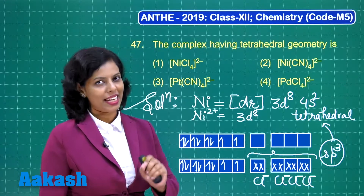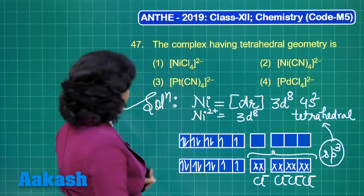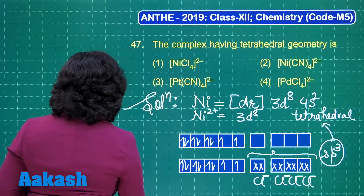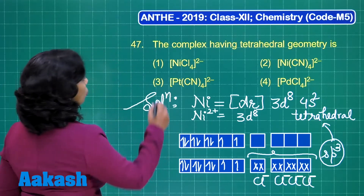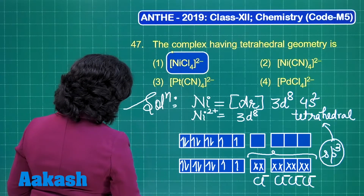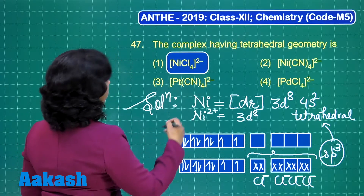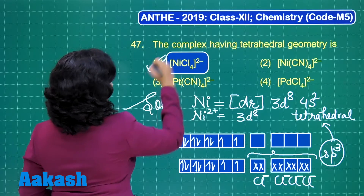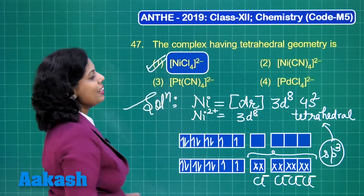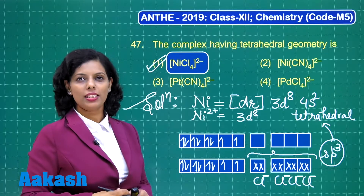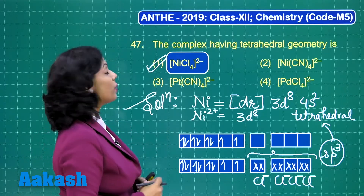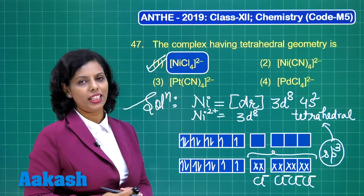On the basis of this, we can say the only complex showing tetrahedral geometry is tetrachloro nickelate. That's why I'll choose option one as the correct answer. Now the turn is for the next question, question number 48.